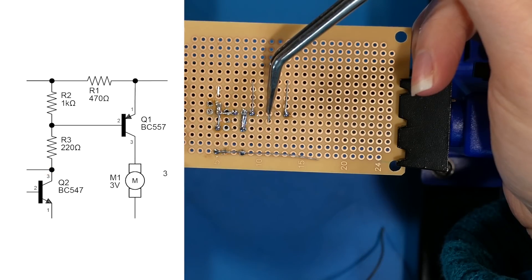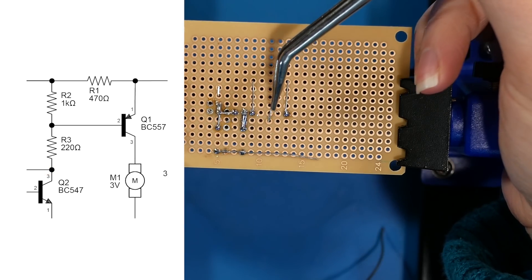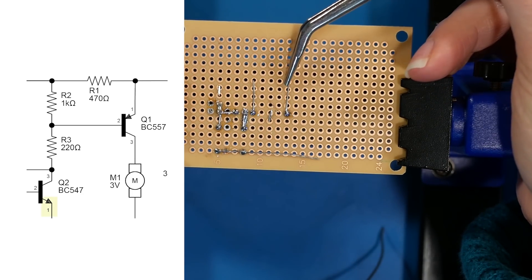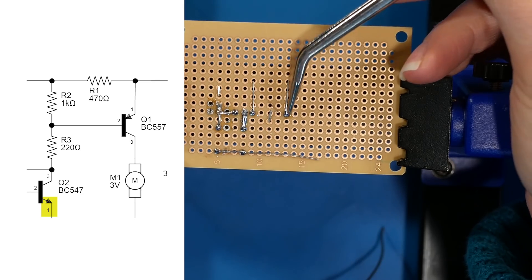And then the other side of R3 and the collector of Q2 right here. I'm not soldering those yet because, as you can see, we still need to add C1, that capacitor, to that junction. And then I have soldered and folded down the emitter of Q2 right here.